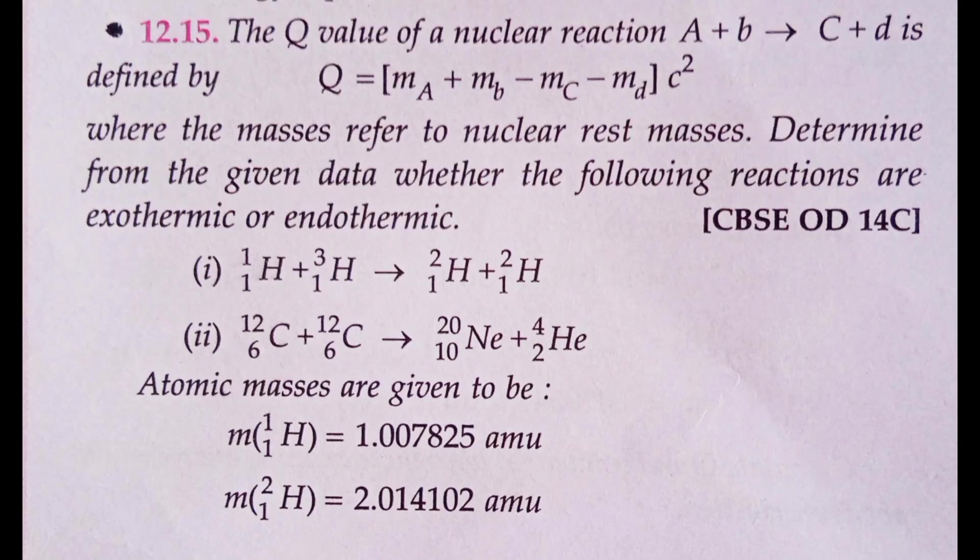The Q value of a nuclear reaction A plus B gives C plus D is defined by Q equals m_A plus m_B minus m_C minus m_D times c squared, where the masses refer to nuclear rest masses. Determine from the given data whether the following reactions are exothermic or endothermic: (i) H-1-1 plus H-1-3 gives H-1-2 plus H-1-2, and (ii) C-6-12 plus C-6-12 gives Ne-10-20 plus He-2-4.